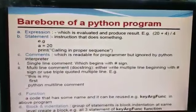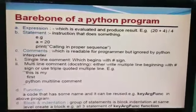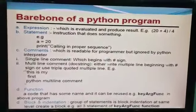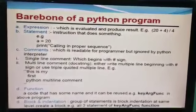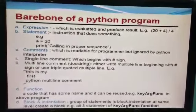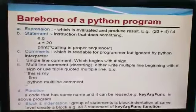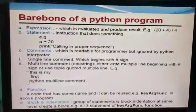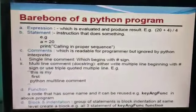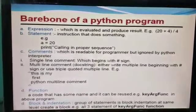Next is comment — which is readable for the programmer but ignored by the Python interpreter. We already discussed about it. Single line comment begins with the hash sign, and multi-line comment is used whenever we have to insert a paragraph in a comment. We can use the hash sign, or we can write inside triple quotes.